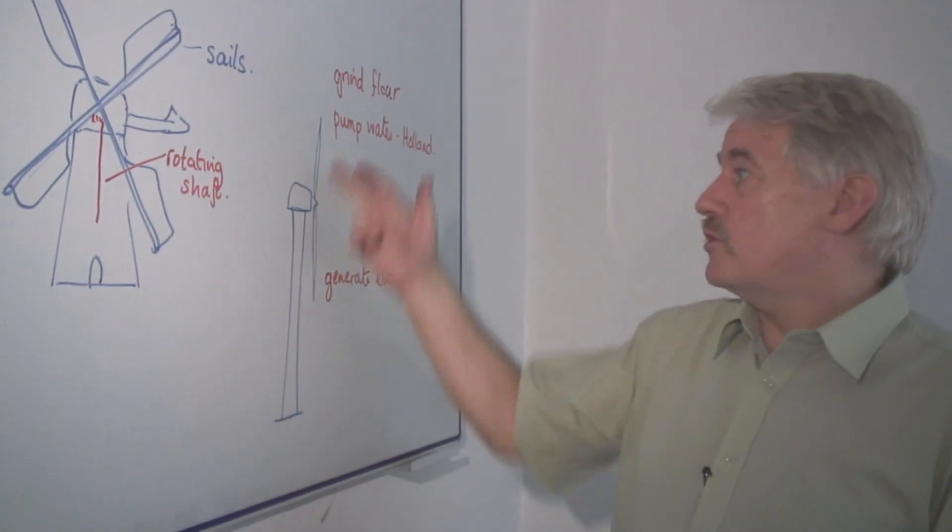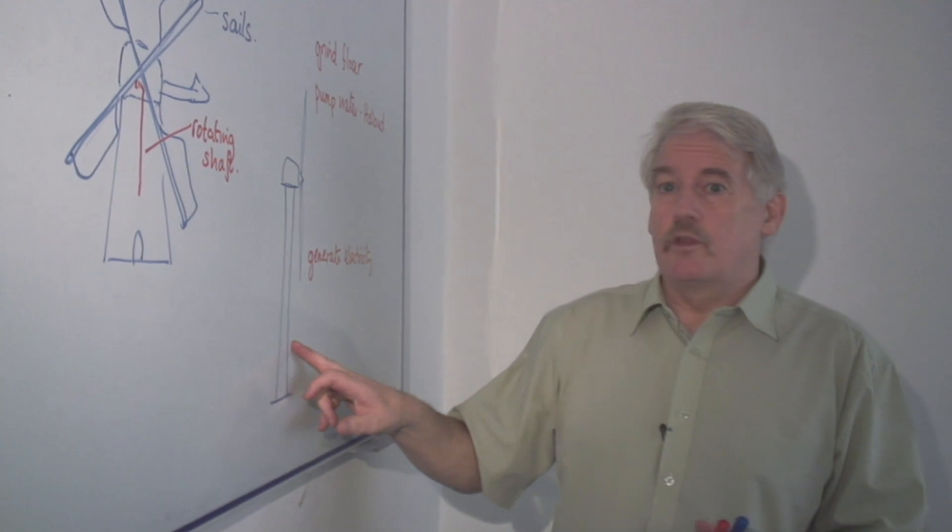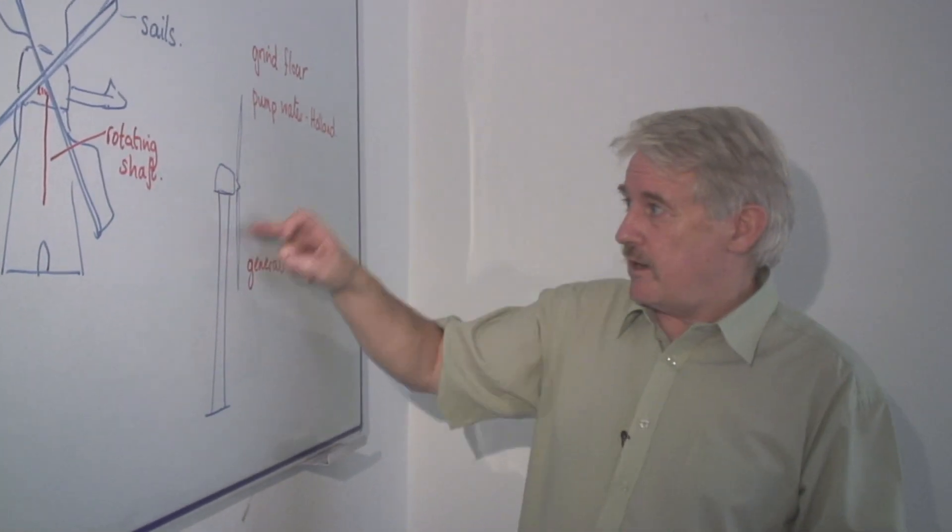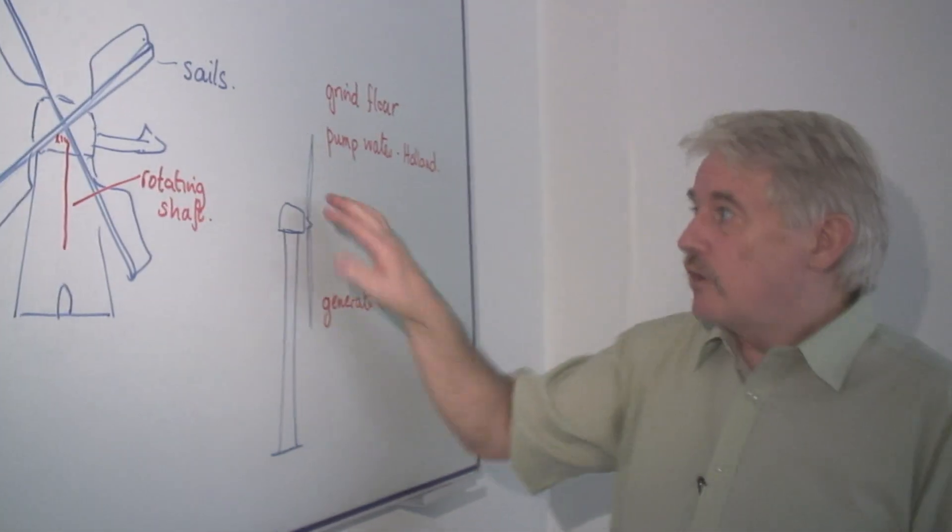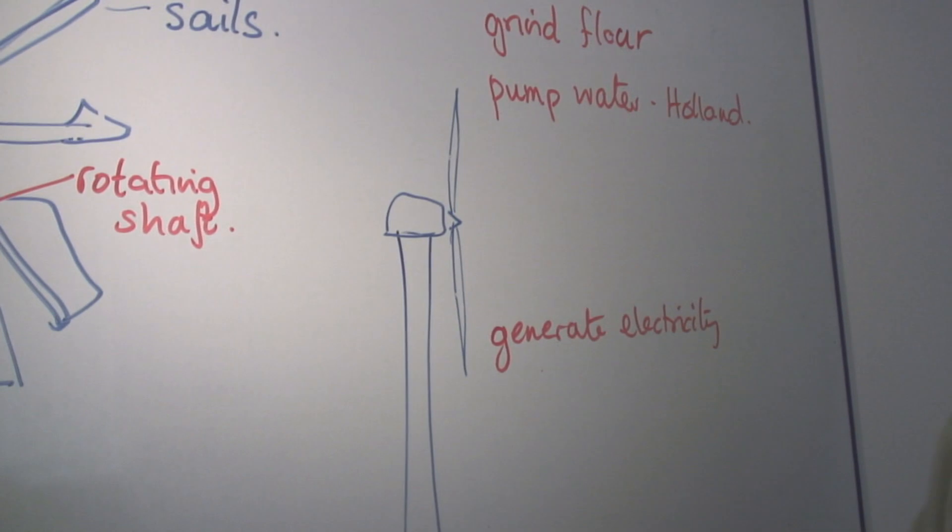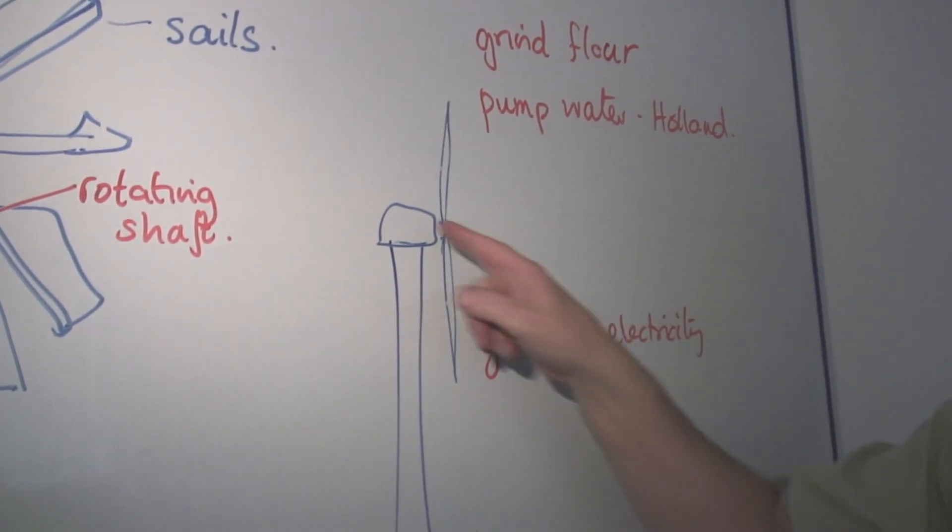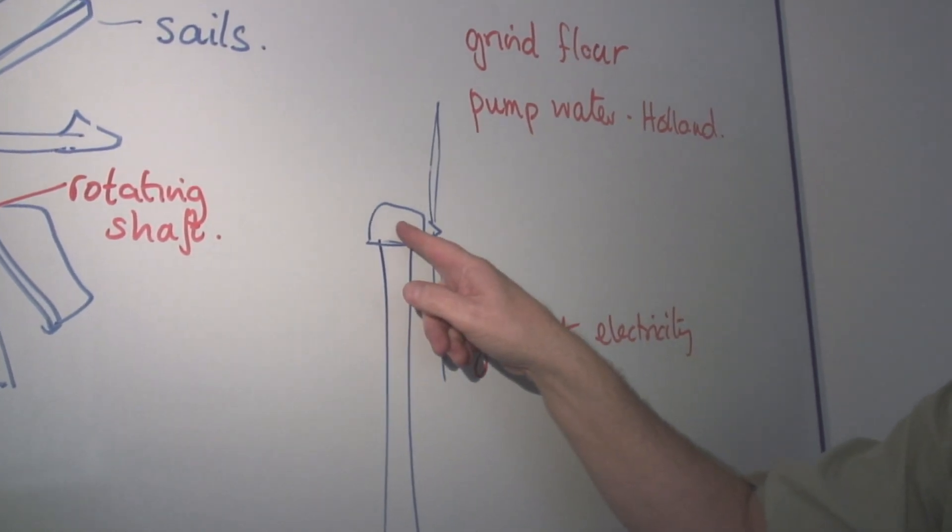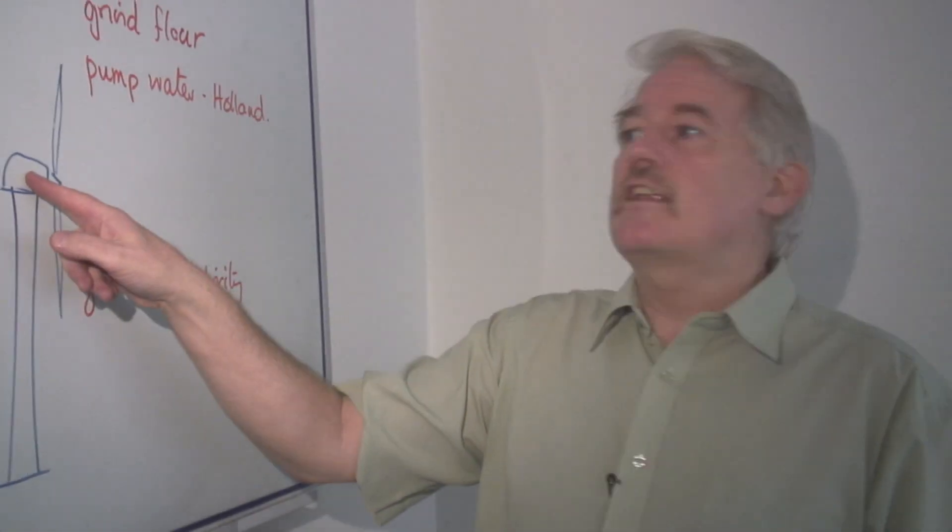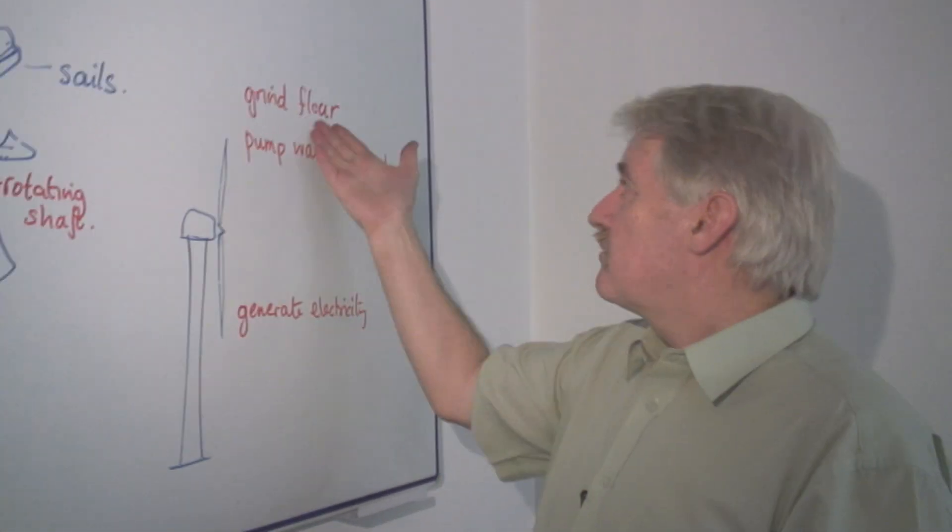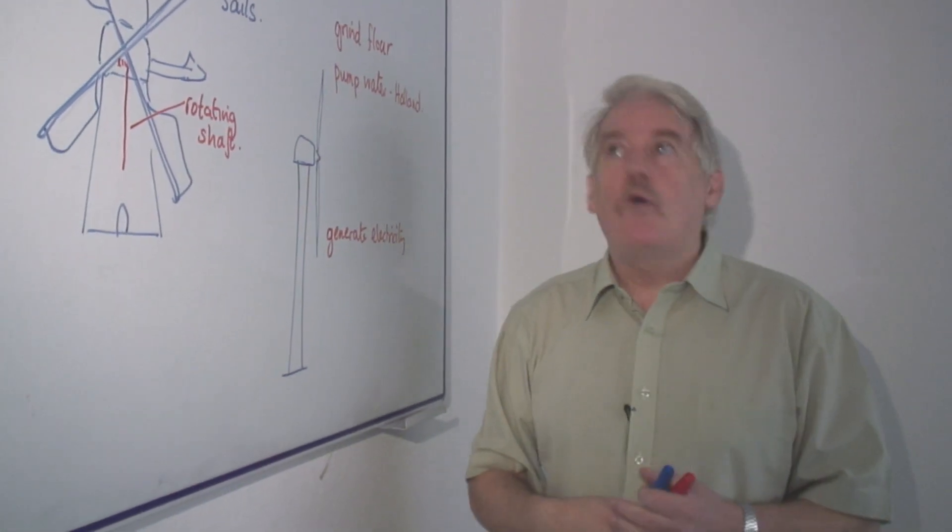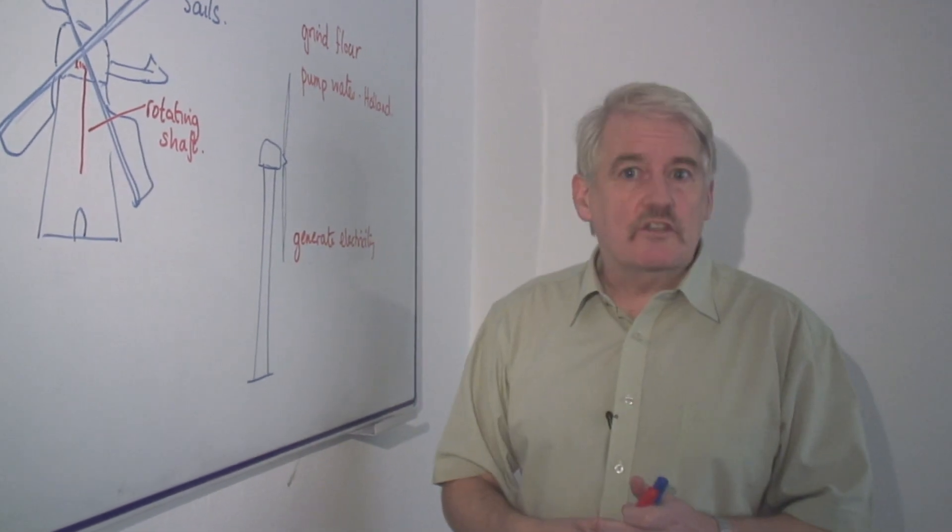Nowadays of course our windmill is different. Although it uses the same technology, essentially a pair of sails and a rotating generator at the top, it actually is generating not rotation, it's generating electricity. So the modern mill generates electricity instead of making flour or pumping water. So that's a little bit about how a windmill works.